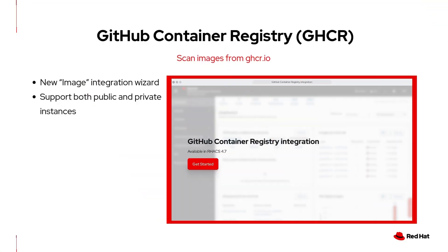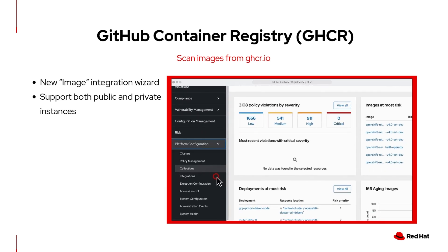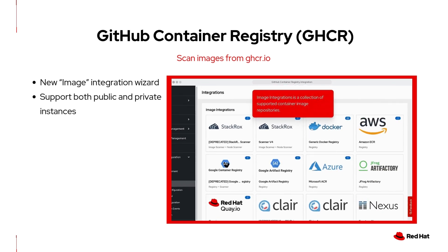ACS 4.7 now includes an out-of-the-box integration with GitHub Container Registry, making it easier for organizations to scan container images hosted in GHCR. This integration supports both public and private instances, allowing ACS to access container images and produce vulnerability scan results more efficiently.